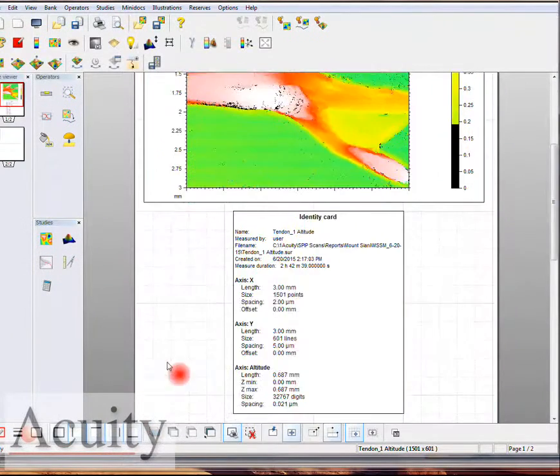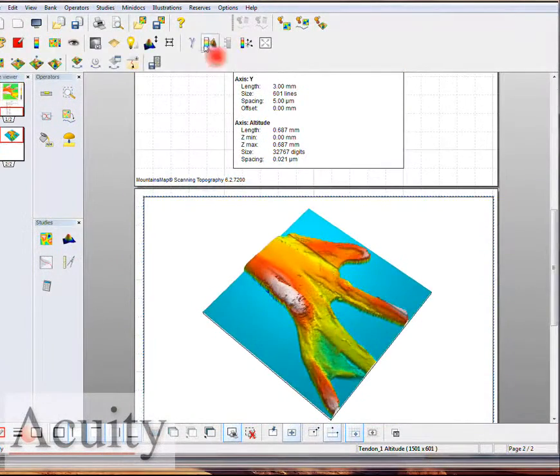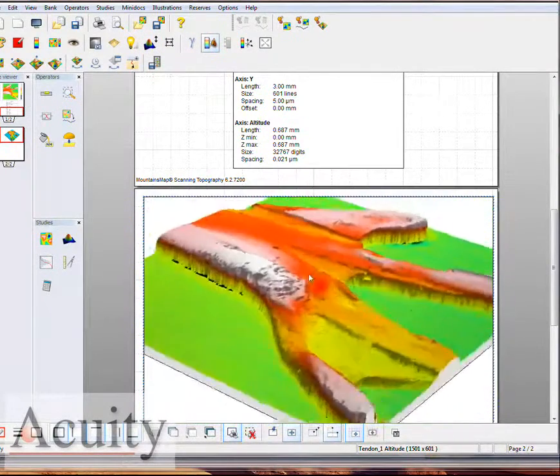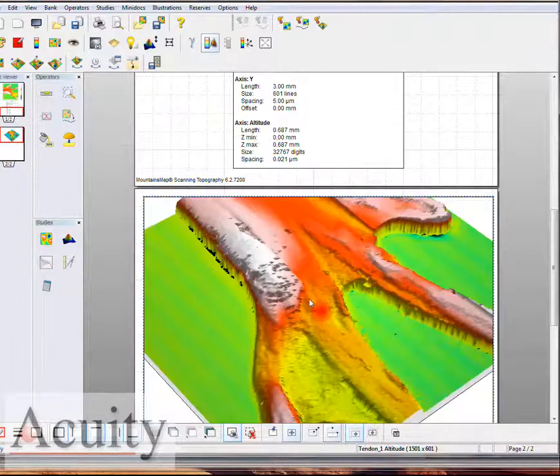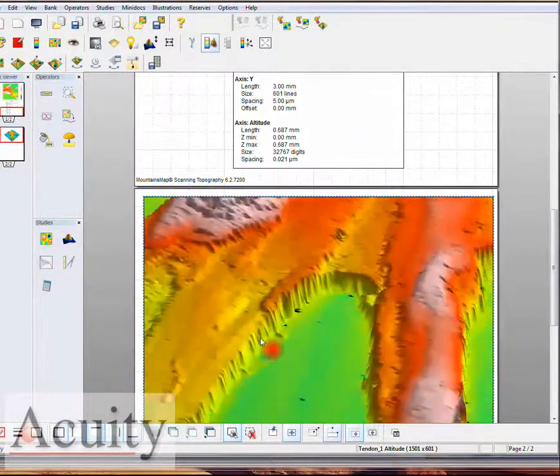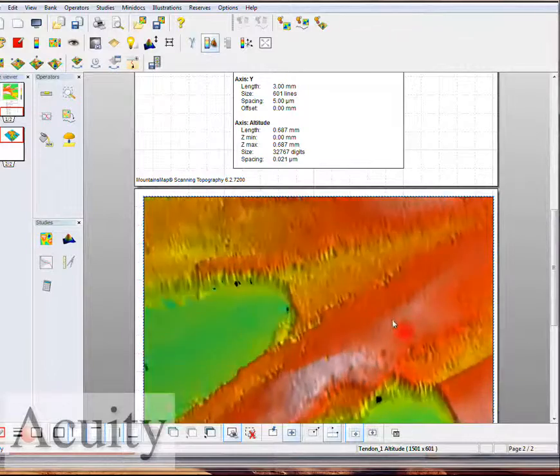This is what that target is going to look like in 3D. Here where we thought we saw some of the target drying out, but as you can see we are getting really good resolution and data of the surface.